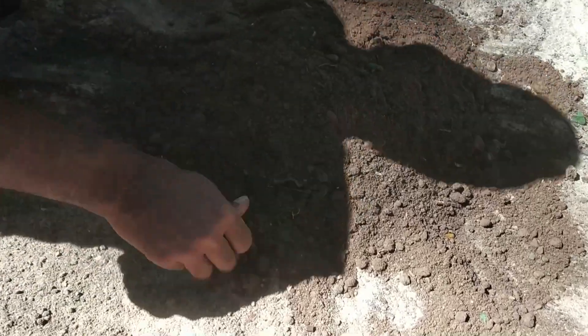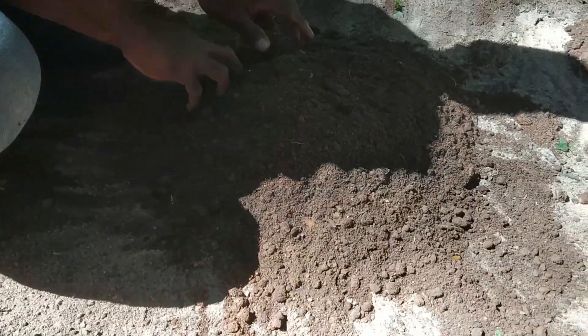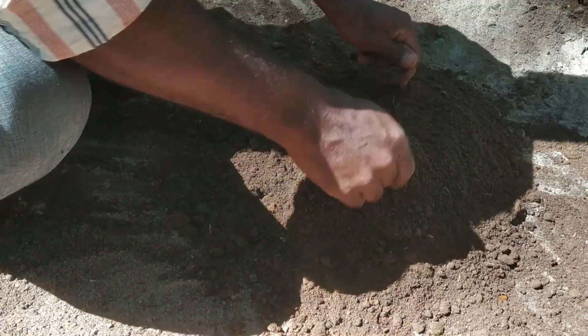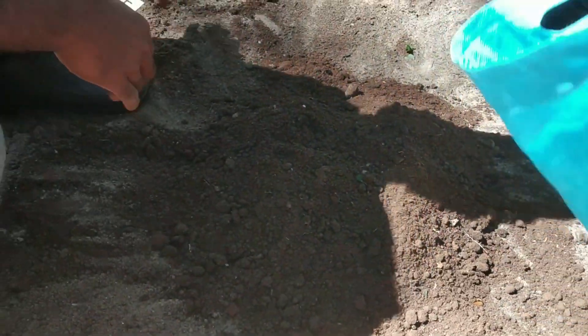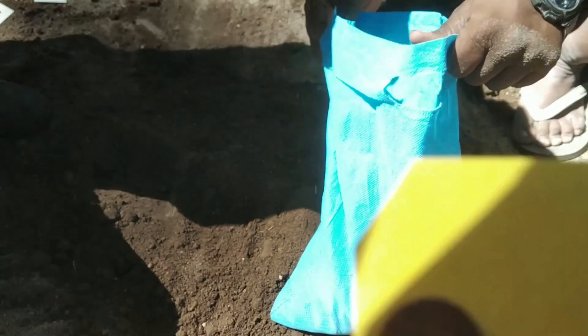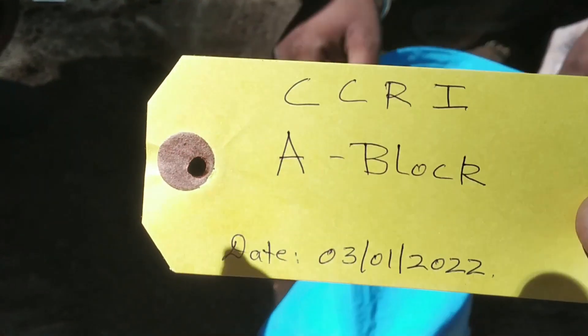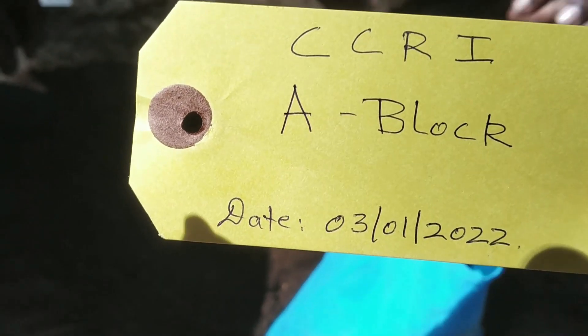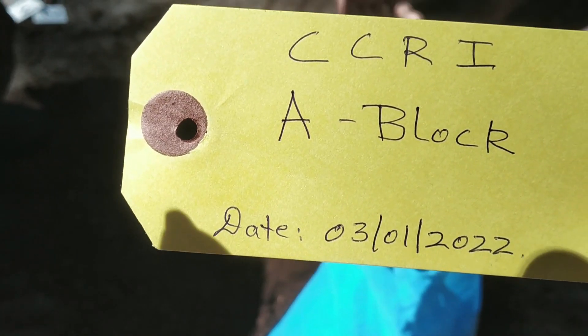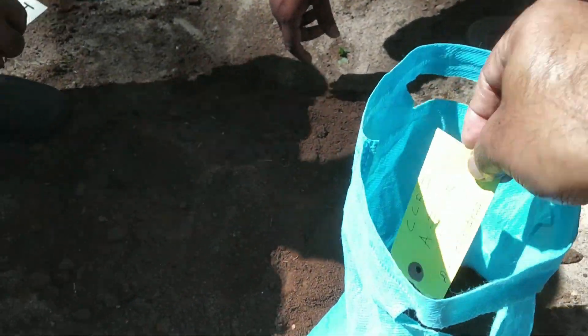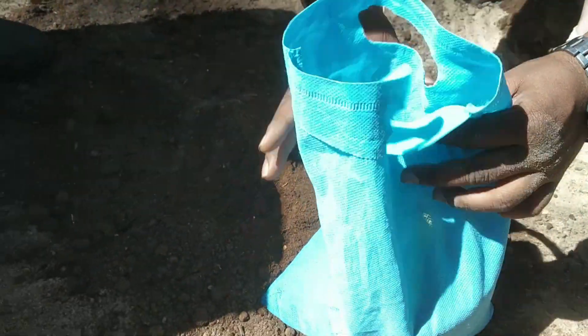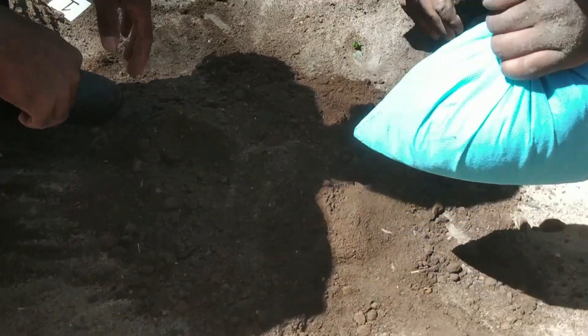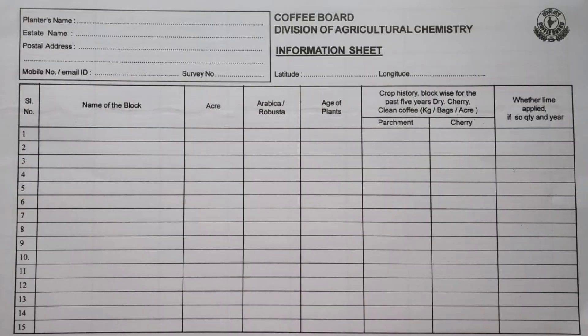Repeat this process three to four times until you arrive at around half a kilogram of soil. Place the soil in a clean cloth bag. Label each sample with the block details and date of soil collection, and keep the label inside the soil bag. Fill in the information sheet with details of the estate, plant material, age of the plant, manure and liming schedule, along with the yield rate of the block.